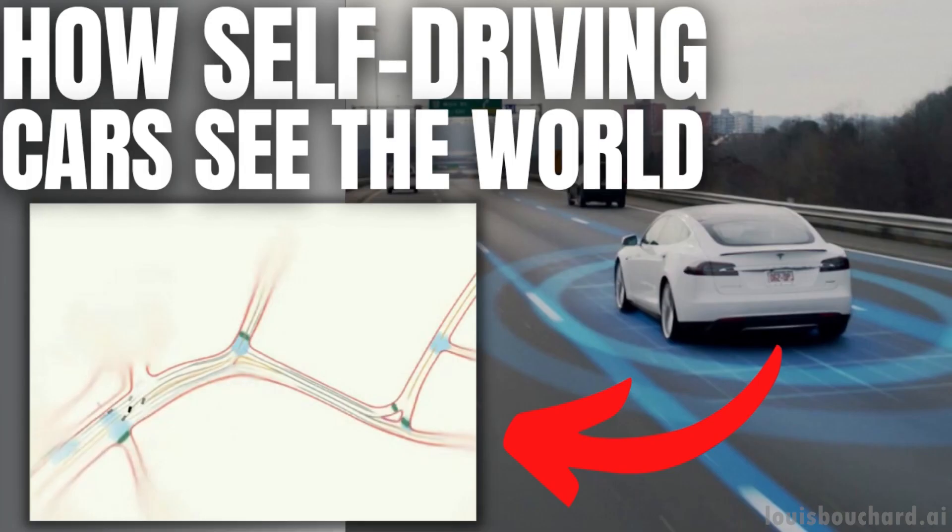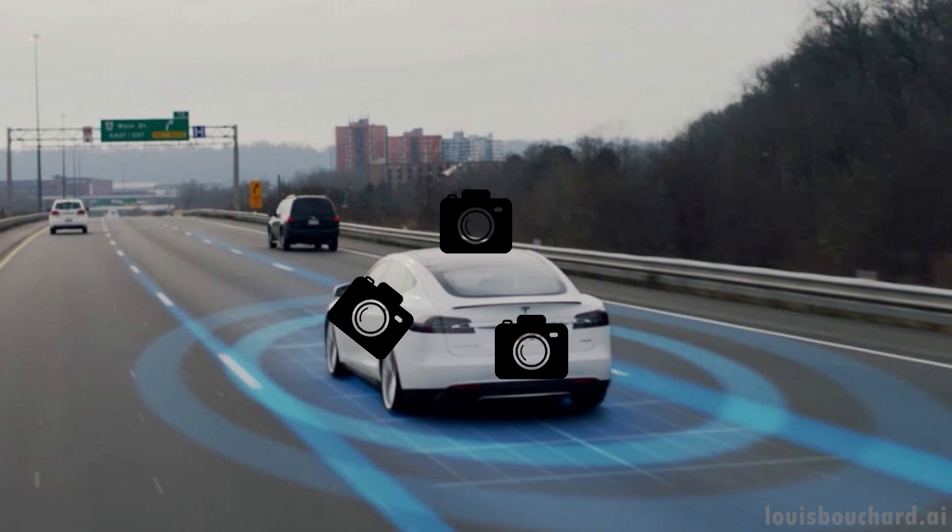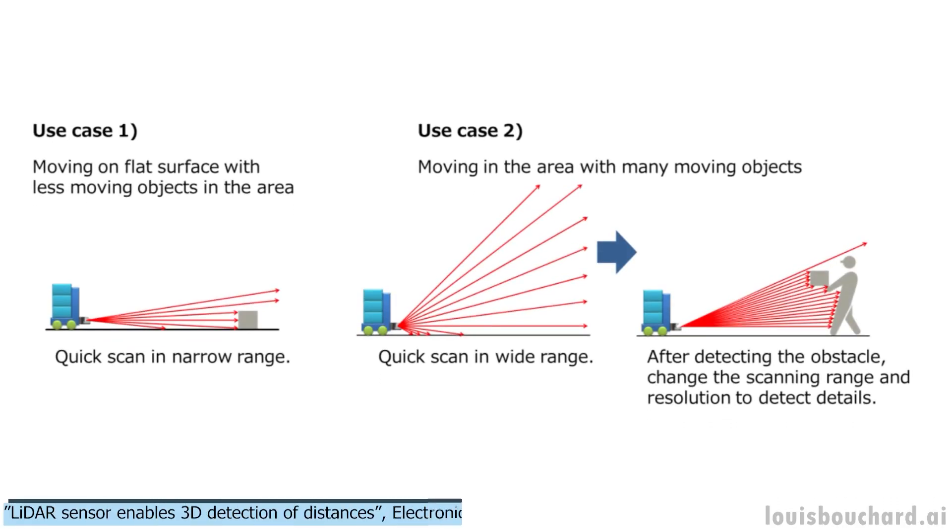We previously covered how Tesla Autopilot sees and works, but they are different from conventional autonomous vehicles. Tesla only uses cameras to understand the world, while most of them, like Waymo, use regular cameras and 3D LiDAR sensors.